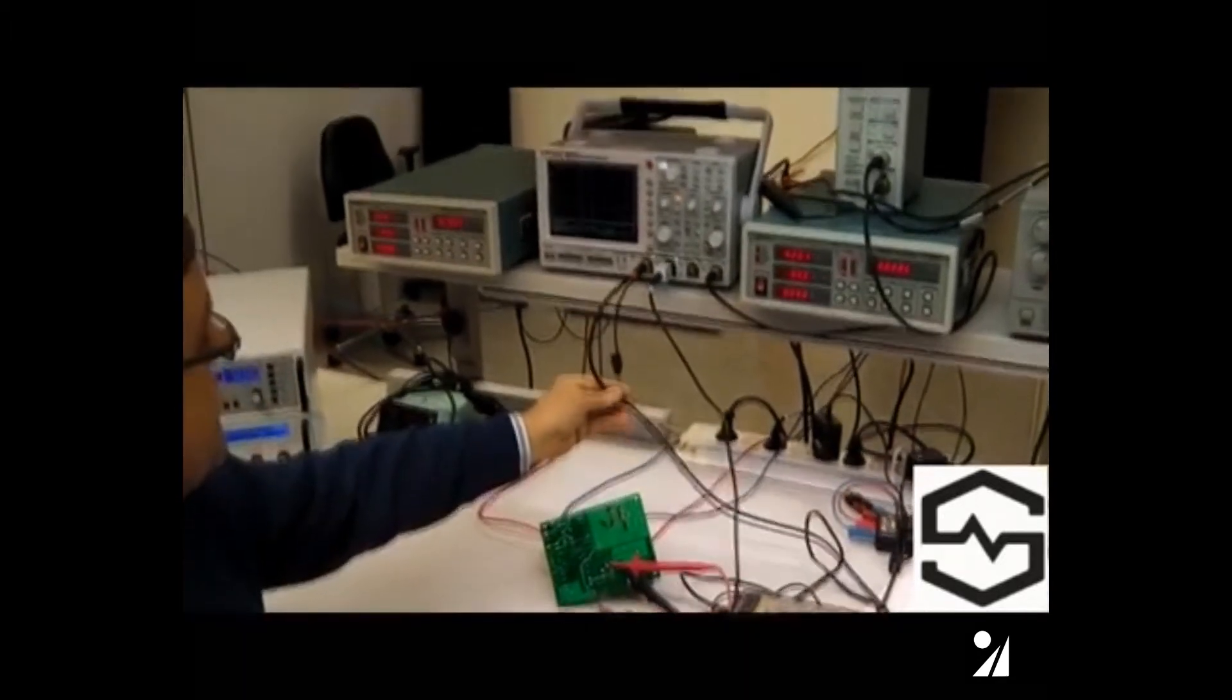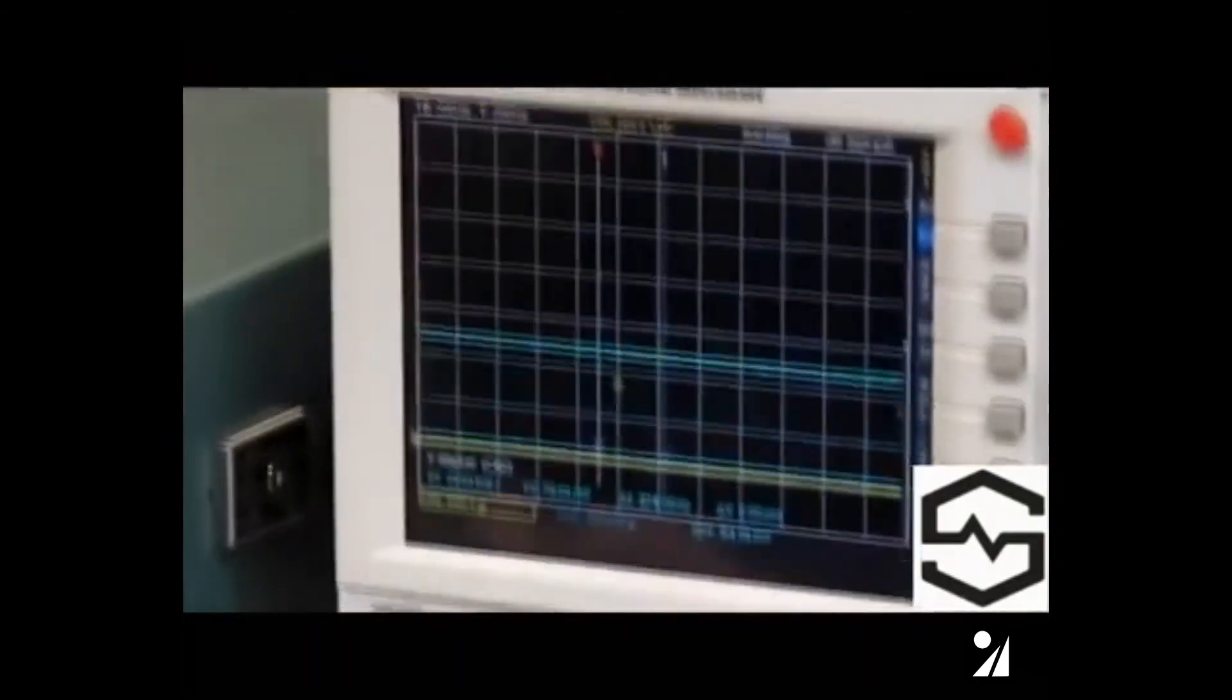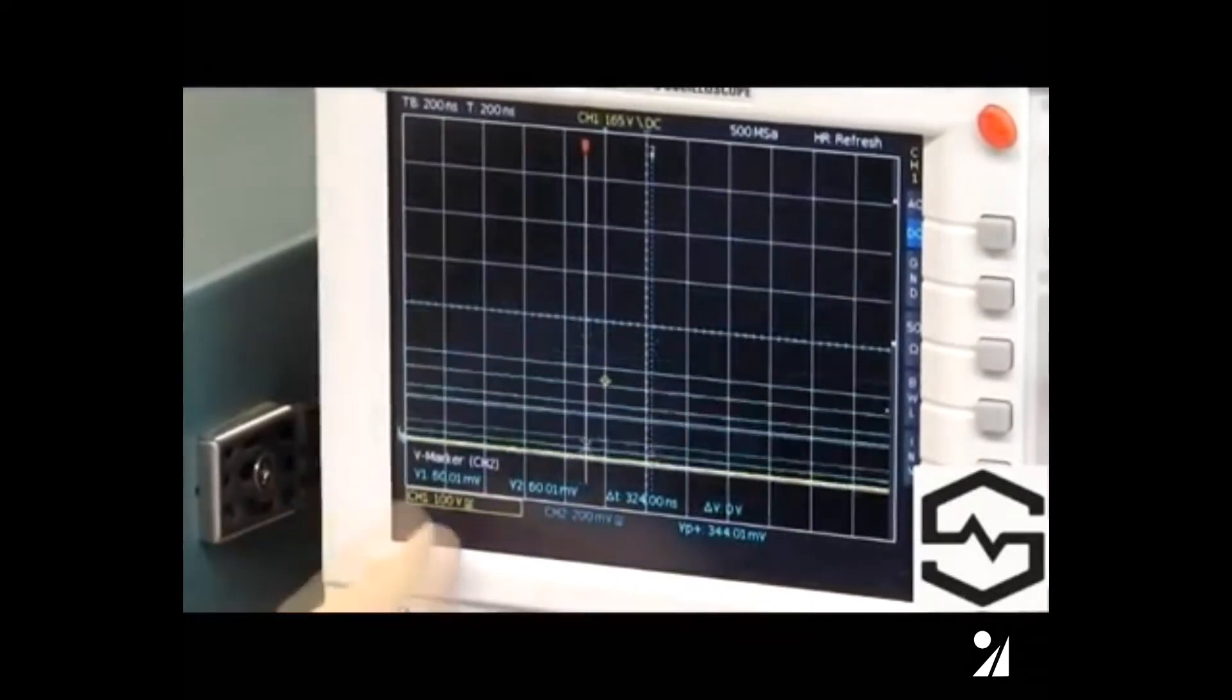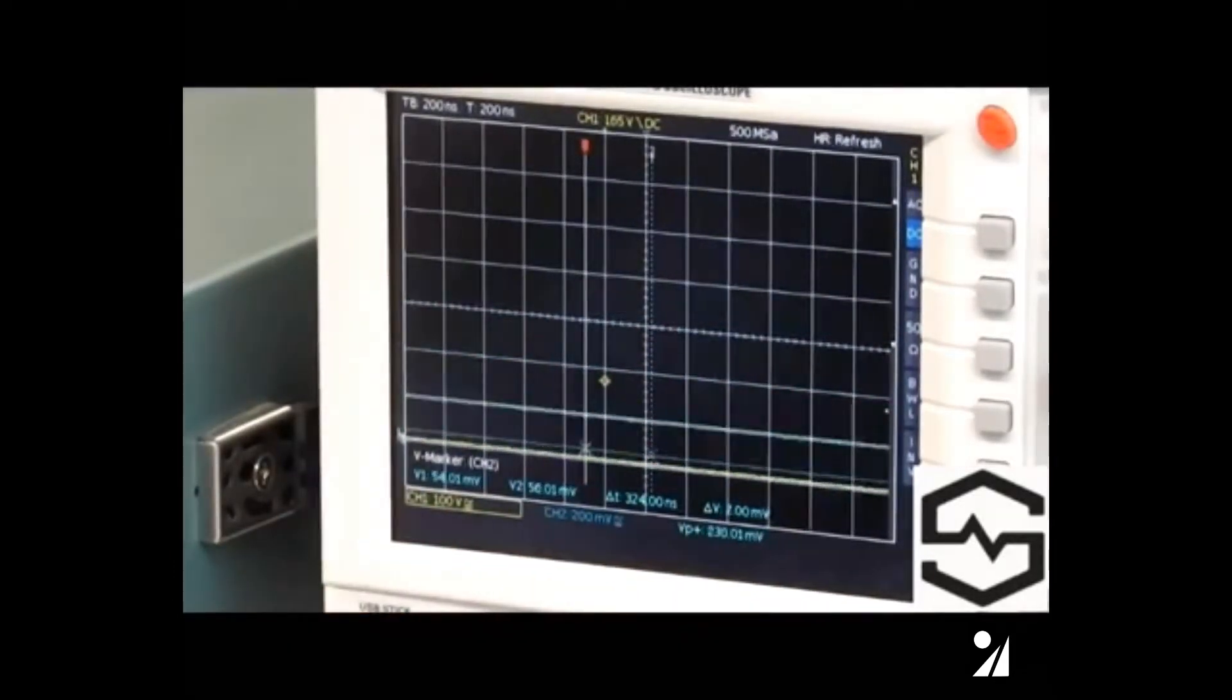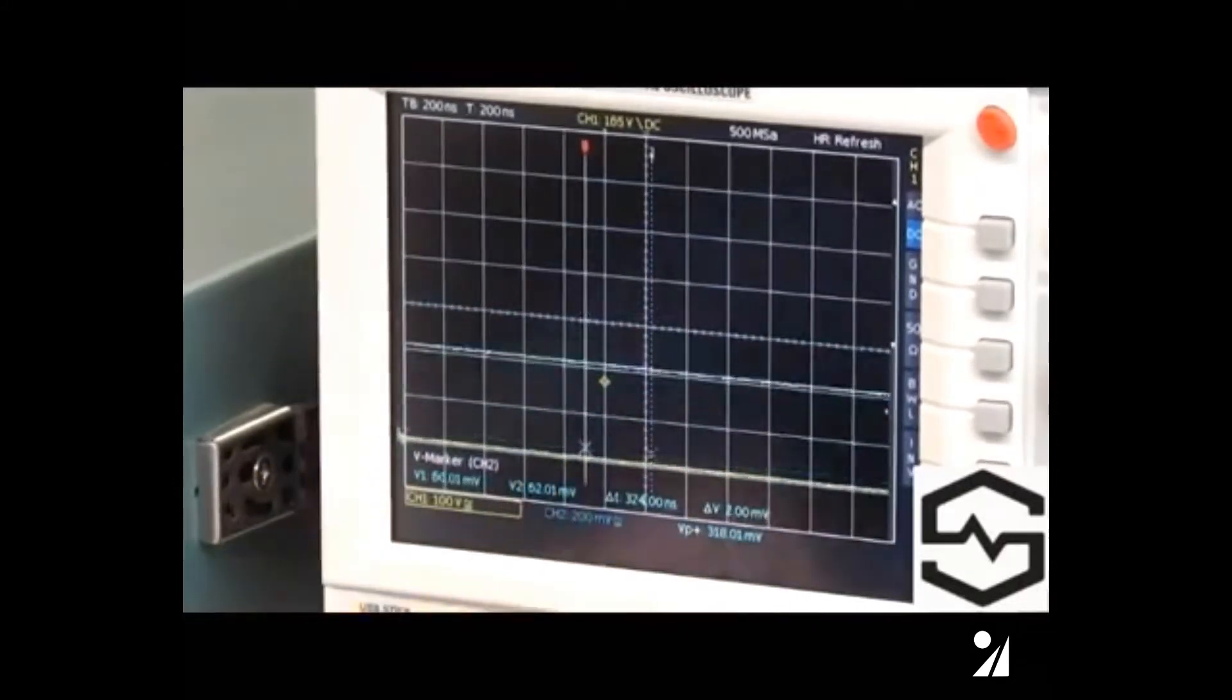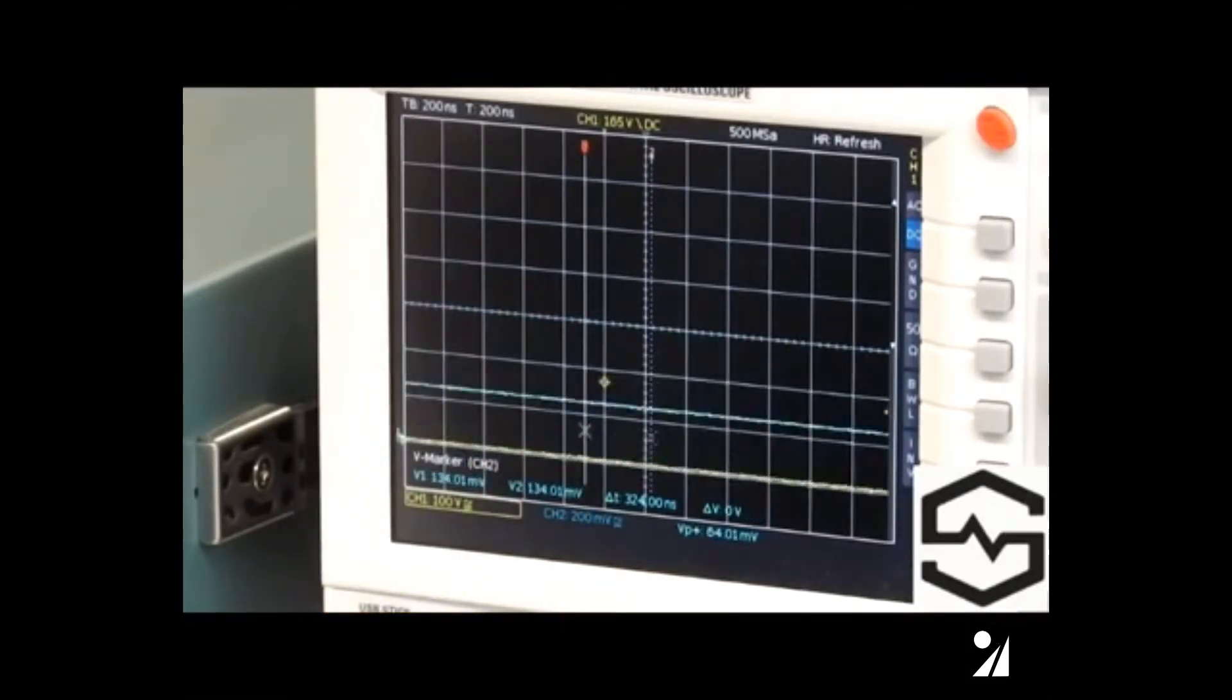On the display of the oscilloscope, I've connected the differential probe to channel 1. Channel 1 is at a setting of 100 volts per division, the yellow channel. And channel 2, the blue channel, is at 200 millivolts per division. So we can see we have a factor of 500 to 1 between the two channels in resolution.